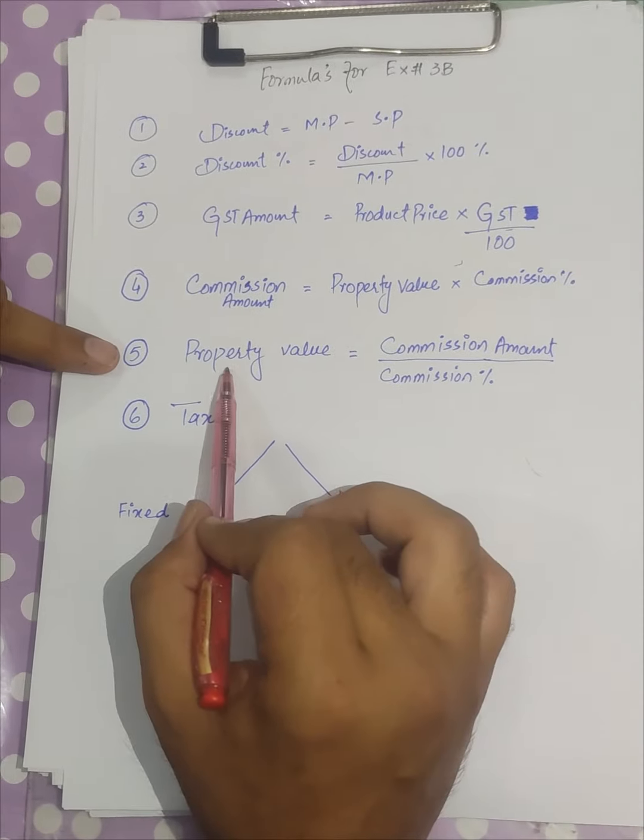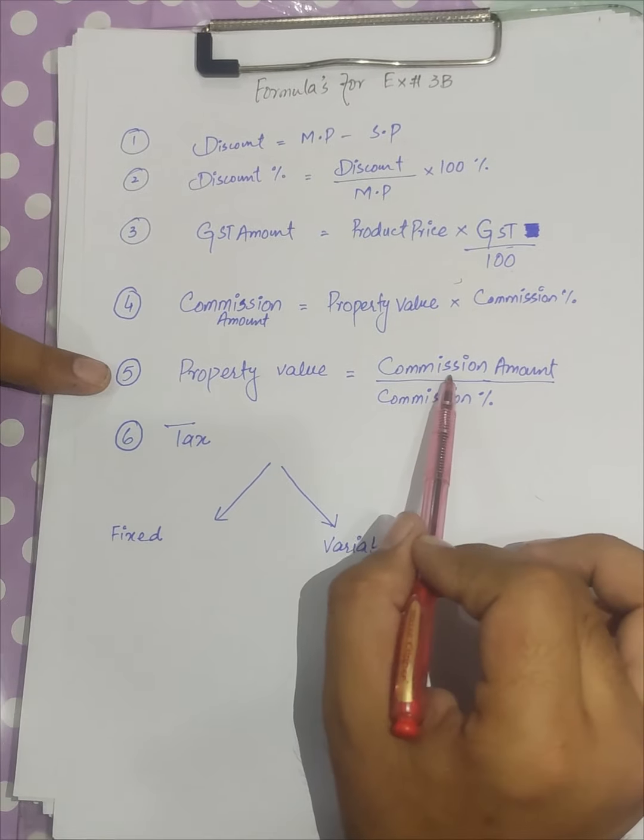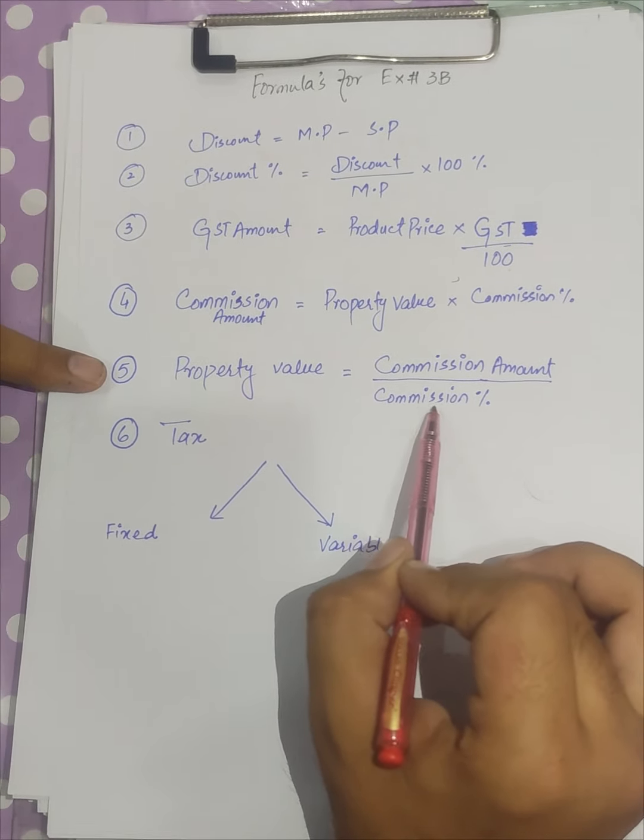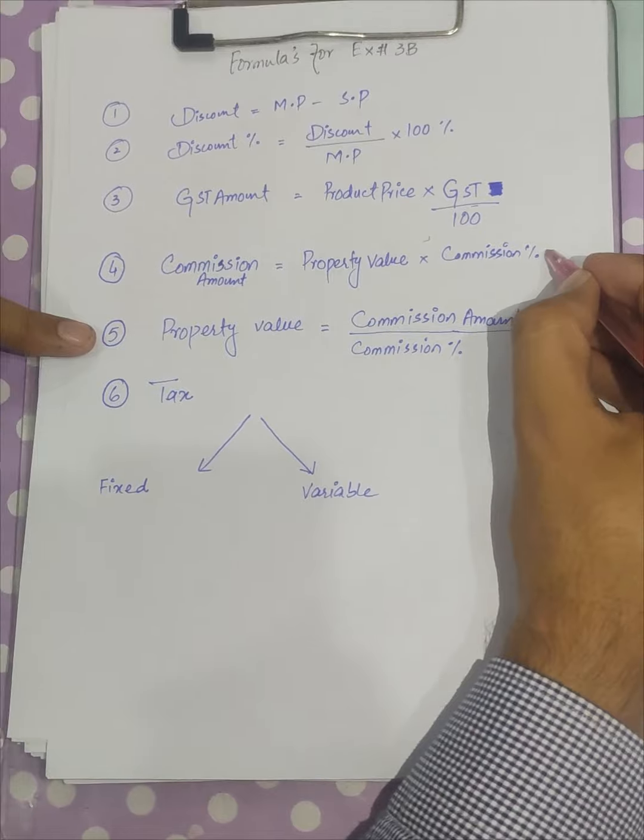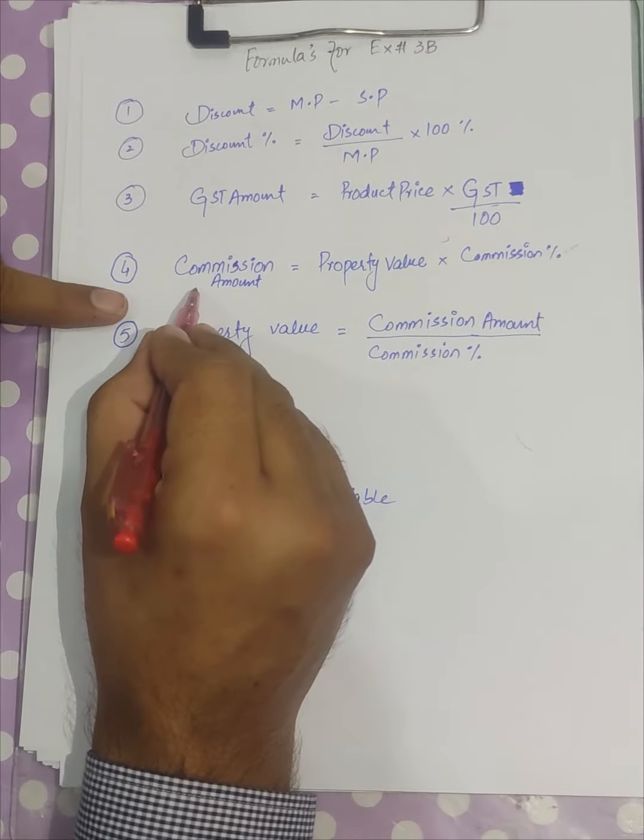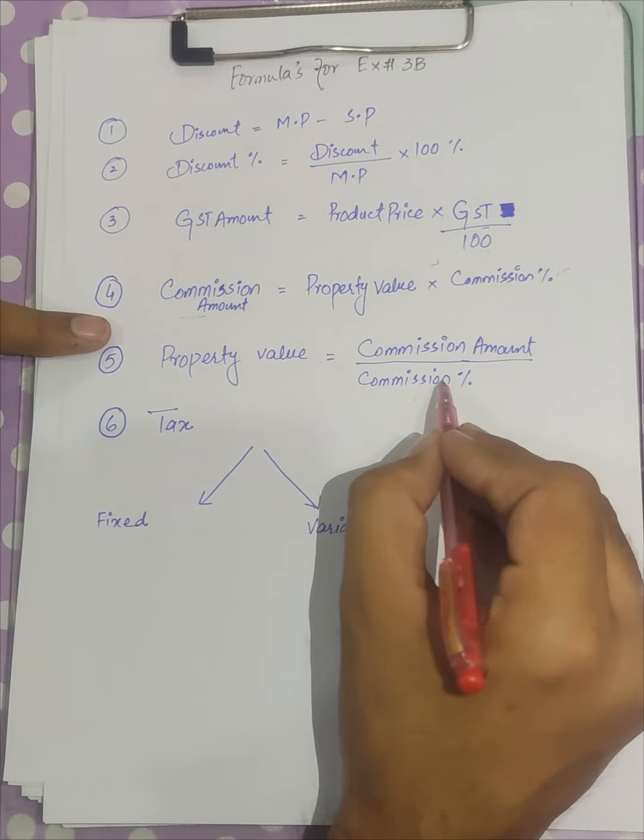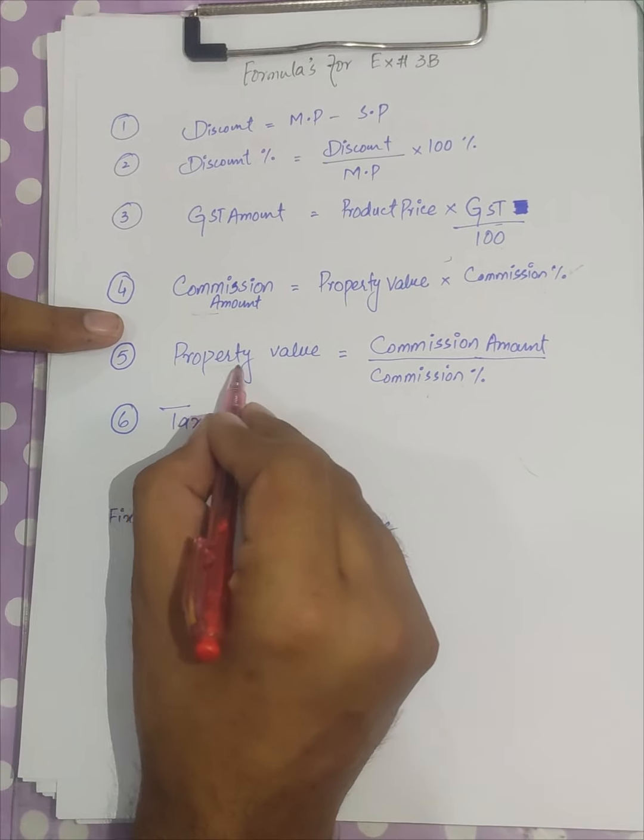We will rearrange this formula and find out the property value by dividing the commission amount by the commission percentage. Look, in the original formula we multiplied it by the property value to get the commission amount, and here we divide the commission amount by the commission percentage to get the property value.